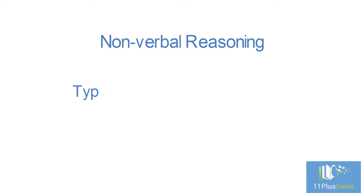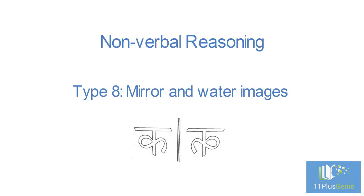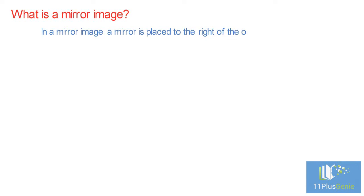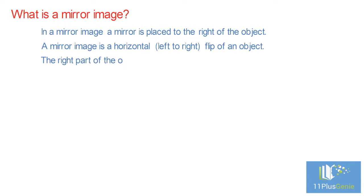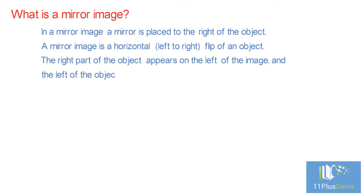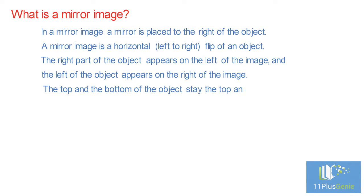Nonverbal Reasoning Type 8 – Mirror and Water Images. In a mirror image, the mirror is placed to the right of the object. A mirror image is a horizontal flip of an object. The right part of the object appears on the left of the image, and the left of the object appears on the right of the image. The top and the bottom of the object stay the top and the bottom of the image.